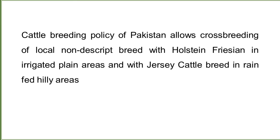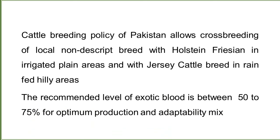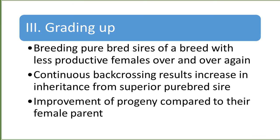Cattle breeding policy of Pakistan allows crossbreeding of local non-descript breeds with Holstein Friesian in irrigated plain areas, and with Jersey cattle in rain-fed hilly areas. The recommended level of exotic blood is between 50 to 75% for optimum production and adaptability. Grading up involves breeding purebred sires of a superior breed with less productive females repeatedly. Continuous backcrossing results in increasing inheritance from the superior purebred sire and improvement of progeny compared to their female parent.